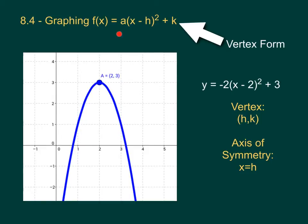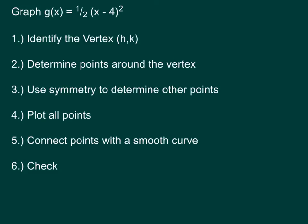Once again, a times (x minus h) squared plus k means that your vertex is at (h, k). In this particular case, the vertex is at (2, 3). Let's see if we can graph an equation using this new vertex form. We'll start with g(x) equals (1/2)(x - 4) squared. The first thing we want to do is identify the vertex, which is the point (h, k).